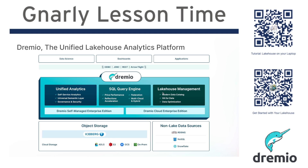For that, you have lakehouse management features so you can manage those Iceberg tables with a modern data catalog based on Nessie, enabling that Git-for-data catalog versioning. You also have automated data optimization, so you don't have to worry about running things like compaction and expiring snapshots on your Iceberg tables — your tables will constantly optimize for storage footprint and performance, so you can focus on running analytics and delivering data to who needs it.